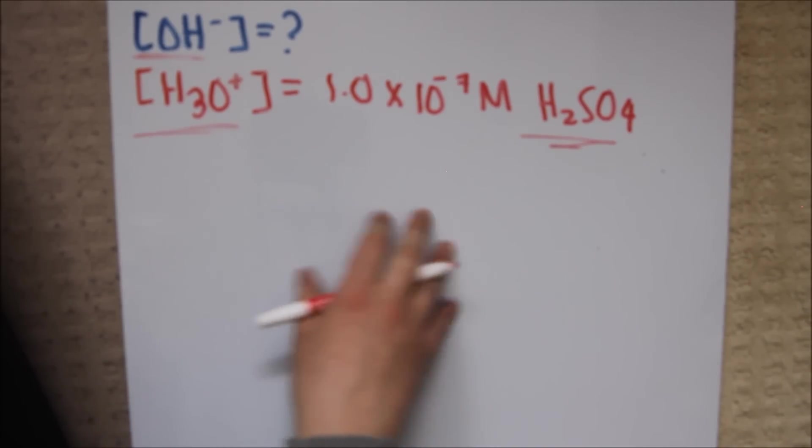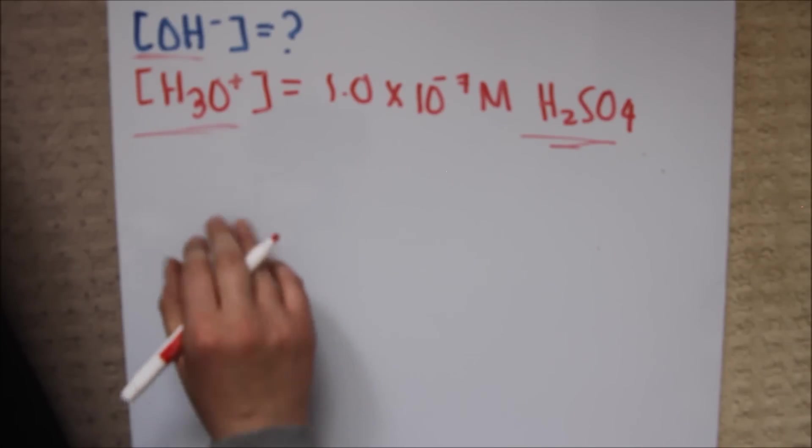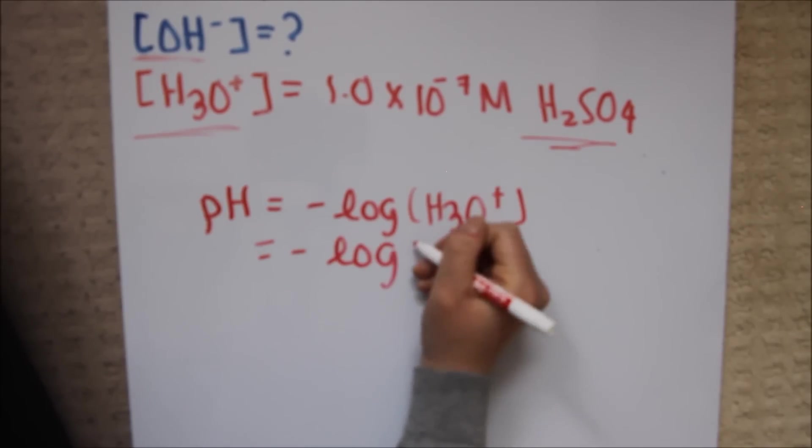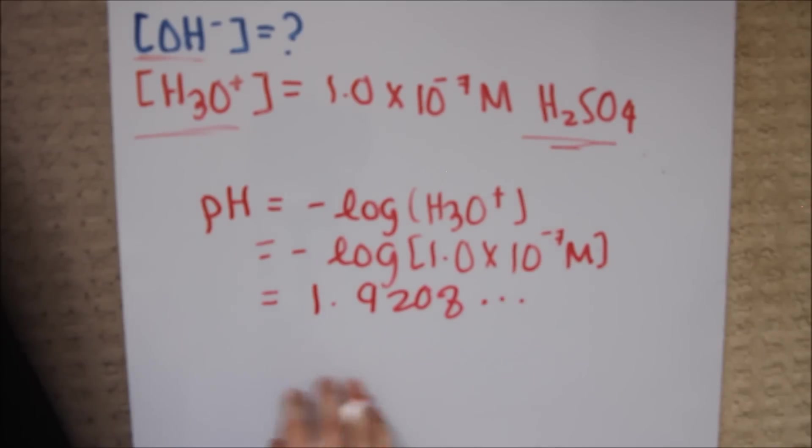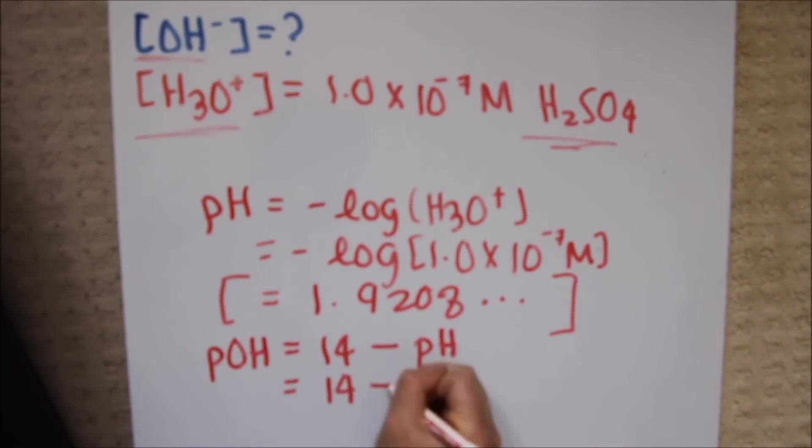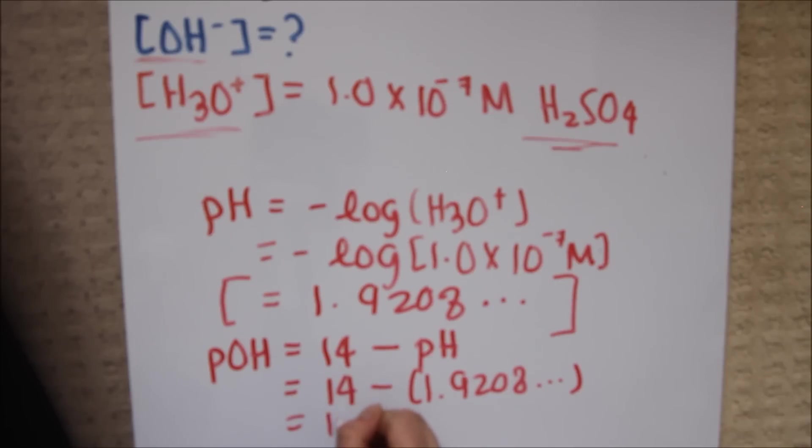Now, the first thing that we need to do, as we saw on our map, was we need to go from H3O+ to pH. We substitute, we get the answer of 1.9208. Now, we're going to keep all of the digits of this equation, and as we know, to go from pH to pOH, we need to subtract pH from 14. Keeping all the digits in my calculator, I subtract 1.9208, the value of approximately 12.079. Now that we have our pOH, we can move on to our next step, which is determining the OH-.